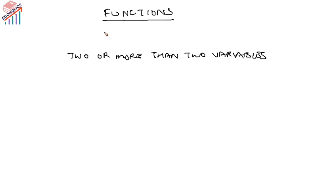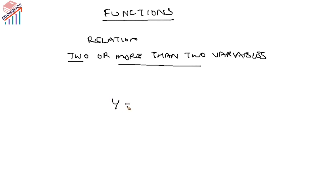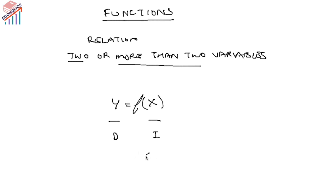A function shows the relation between two or more variables — that is what we call the functional relationship. It means the function expresses the dependence of one variable on another. For example, if we write y = f(x), then y depends on the value of x, where f stands for function. Every value of y is determined by the value of x. In this scenario, y is the dependent variable and x is the independent variable.